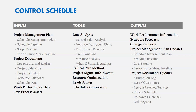The outputs of Control Schedule include work performance information — you take the work performance data input and turn it into useful information, such as whether you're ahead or behind schedule. You also get schedule forecasts, predicting when you'll finish or hit certain milestones. As is common in monitoring and controlling processes, you'll also have change requests, updates to the project management plan, and project document updates.